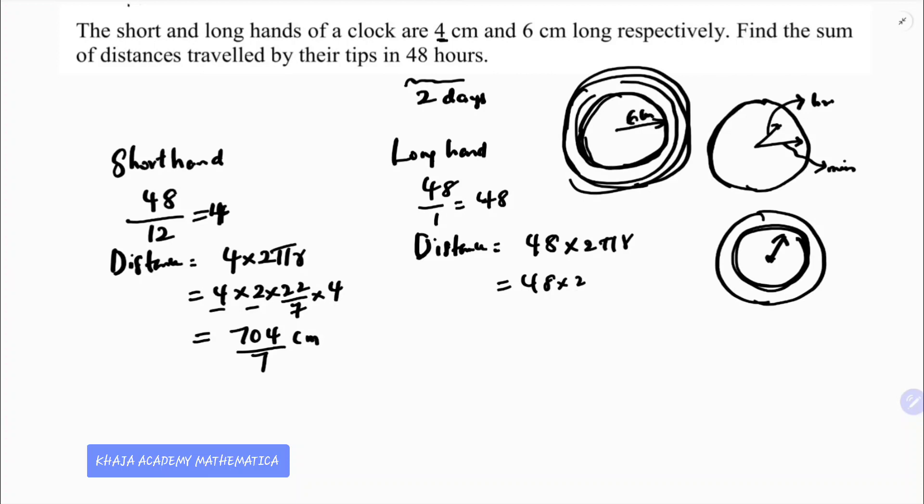So 48 times 2πr: 48 into 2 into 22 by 7 into the radius which is 6. Here 2 into 22 is 44, 44 into 6 into 48, so the total value will be 12672 by 7 centimeters.